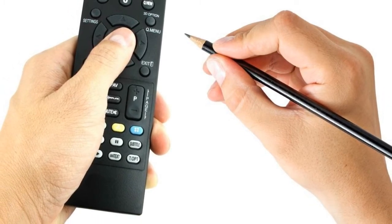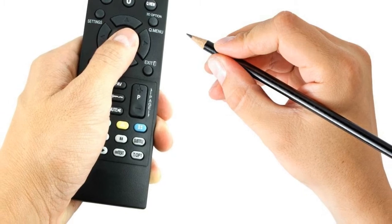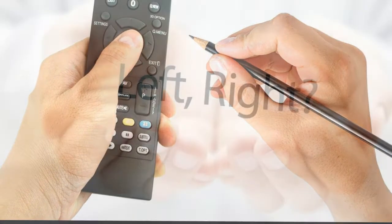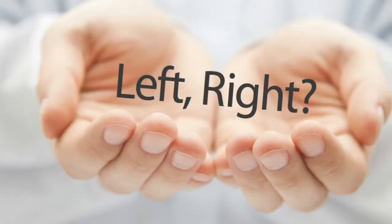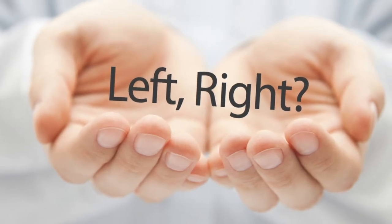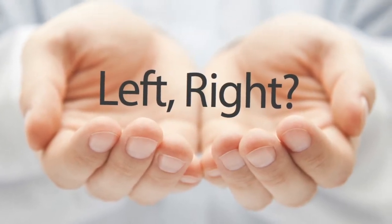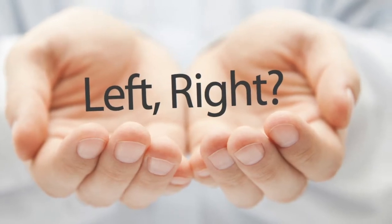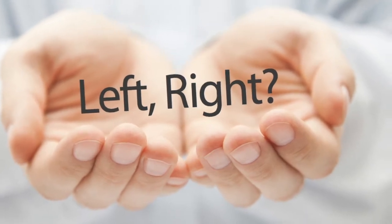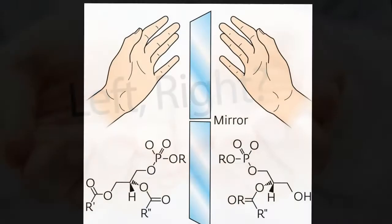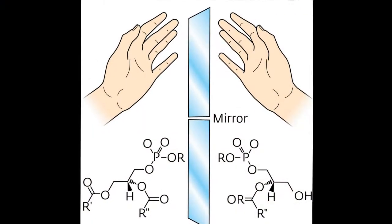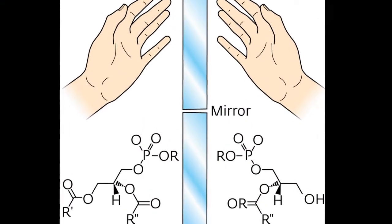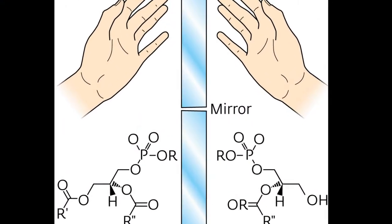Handedness refers to the hand that one prefers to use, regardless of performance, or the hand that performs faster or more precisely on manual tests. About 88.2% of people are right-handed, with left-handers holding a margin of 8–15%. The rest are either ambidextrous or show neither hand as dominant.